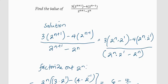Hello everyone, welcome to ashatech.com. Once again we have a question on algebra that involves application of laws of indices. The question says: find the value of [3 × 2^(n+1) - 4 × 2^(n-1)] divided by [2^(n+1) - 2^n].